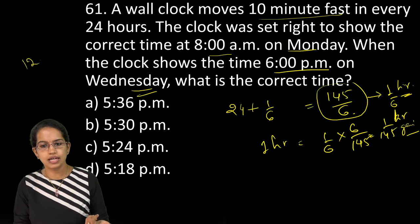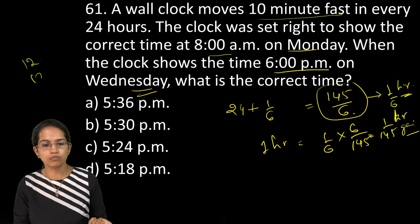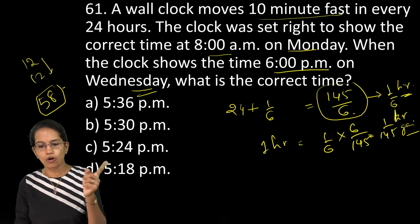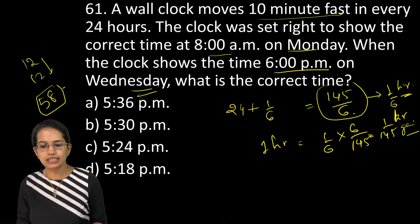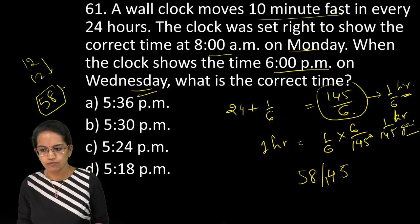So there would be 8am to 8pm Monday would be 12 hours. Then again 8am in the morning would be 12 hours more and so on. So you calculate this. You add this and you get how many hours? 58 hours. Now you have 58 hours that the clock has moved. So how much it has gained?